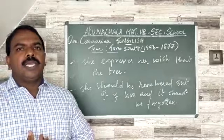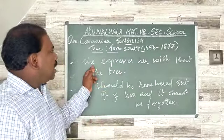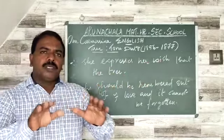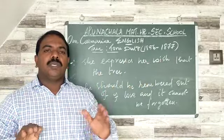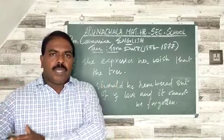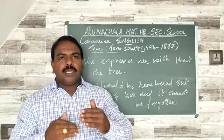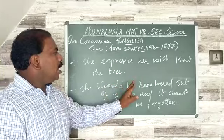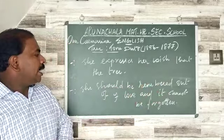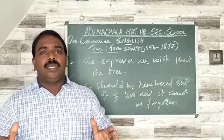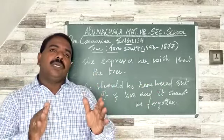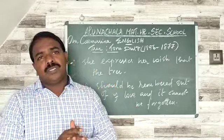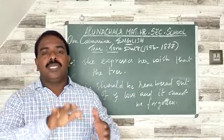She expresses her wish in this poem — she blessed the tree, immortalizing it, and compared it with Wordsworth's poem. She says the tree should be remembered out of love and cannot be forgotten. Even after her life is over, she says there is no end for this casuarina tree — and that is why she blessed it.